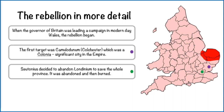Suetonius, who was the Governor of Britain at the time, rushed back to Londinium, which was an important commercial centre and quite a new settlement at the time. It couldn't be protected, so Suetonius abandoned it. The people that didn't evacuate faced a similar fate to those in Colchester. An estimated 70,000 to 80,000 people died in those cities.